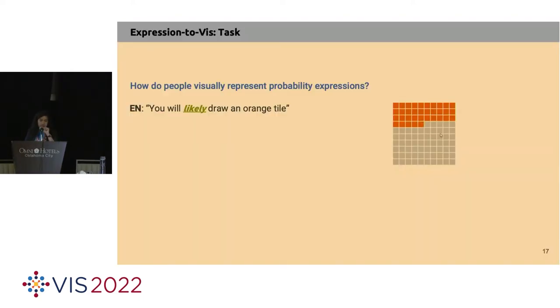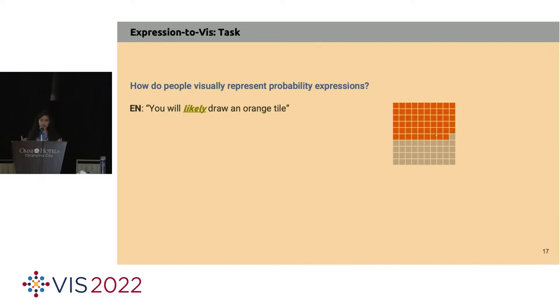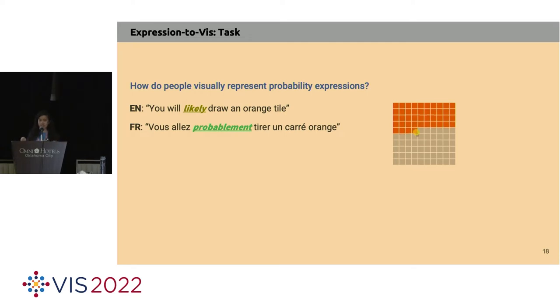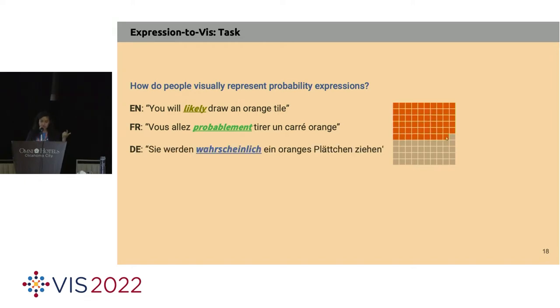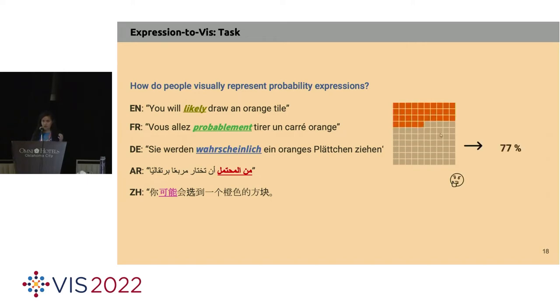When a participant takes the experiment, we prompt them with a fictitious scenario where they are drawing a tile from a set of 100 tiles — some orange and some gray. If they pick an orange tile, they win a prize. Their chances vary depending on the orange-to-gray proportion. In the first experiment, 'expression to visualization,' we tell participants 'you will likely draw an orange tile' and ask them to visually represent the proportion of orange to gray tiles that would achieve such likelihood. We repeat this across all five languages.